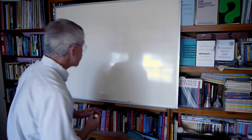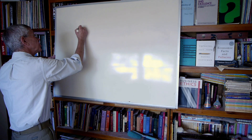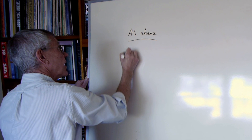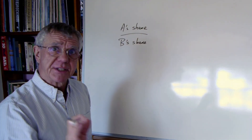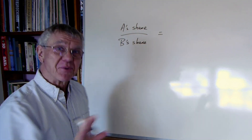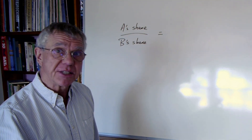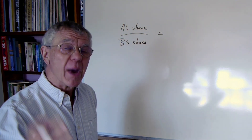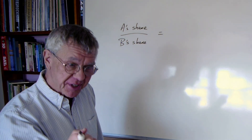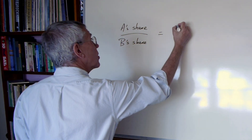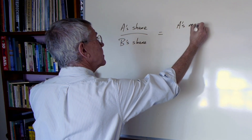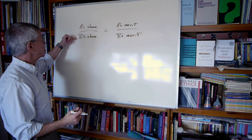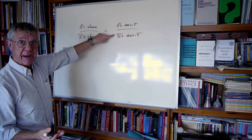It's a question of equality. If we're trying to understand the proper ratio between two people's shares — say A and B — Aristotle says it comes down to merit. The proportion of A's share to B's share should be just the proportion of A's merit to B's merit. Equivalently, A's share relative to A's merit should equal B's share relative to B's merit.